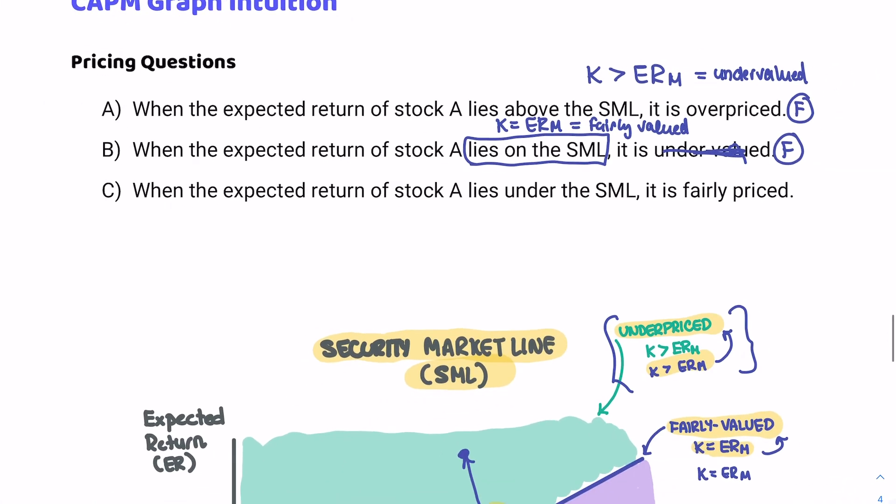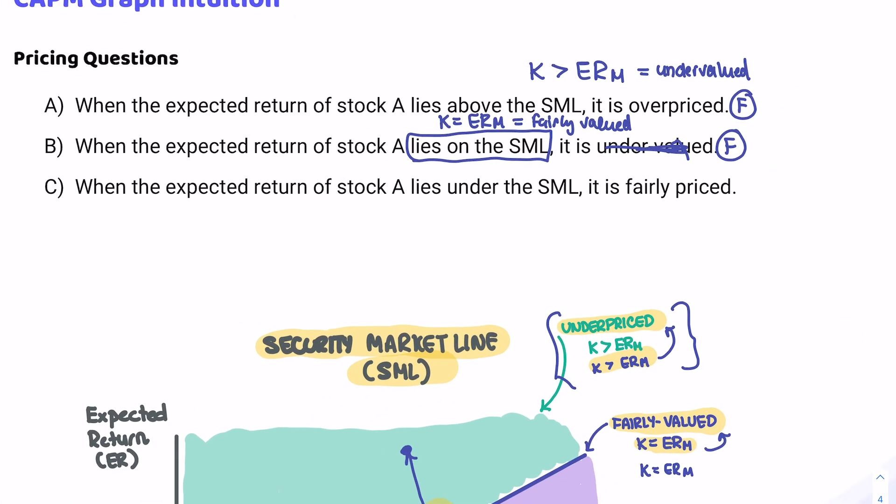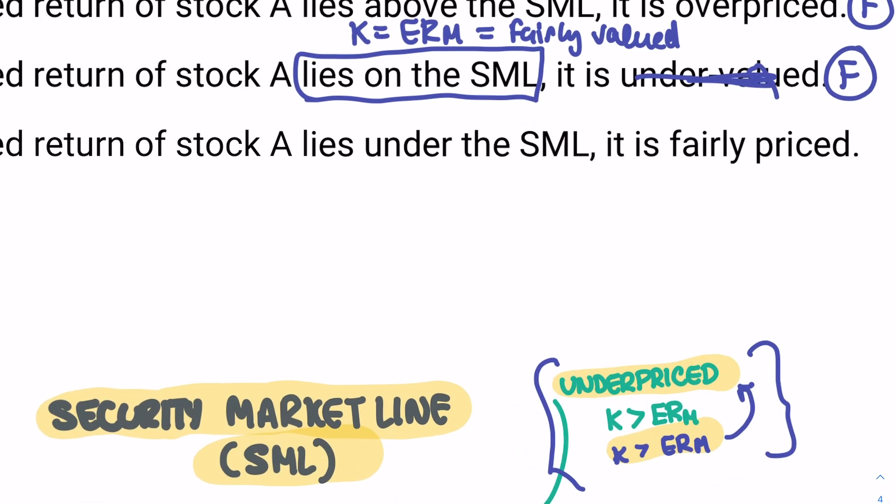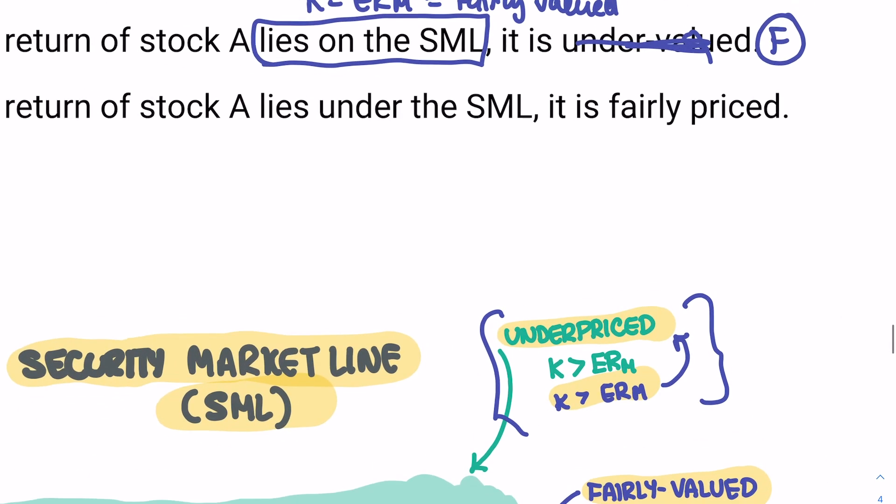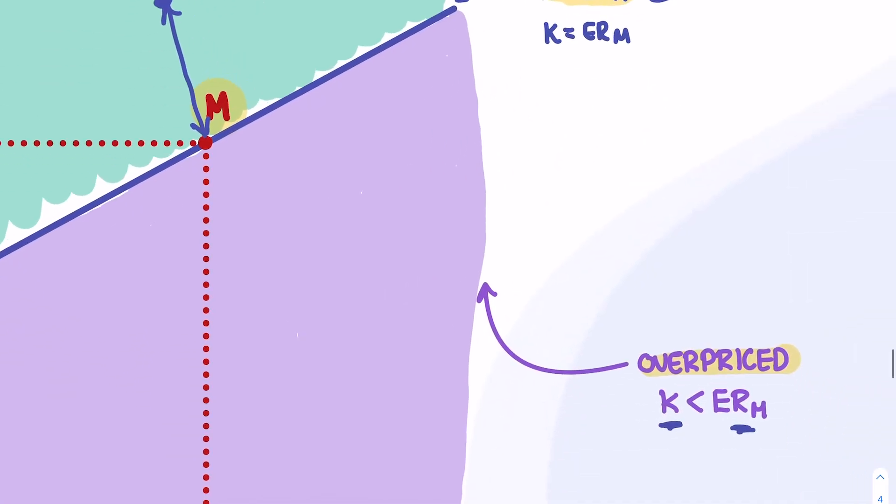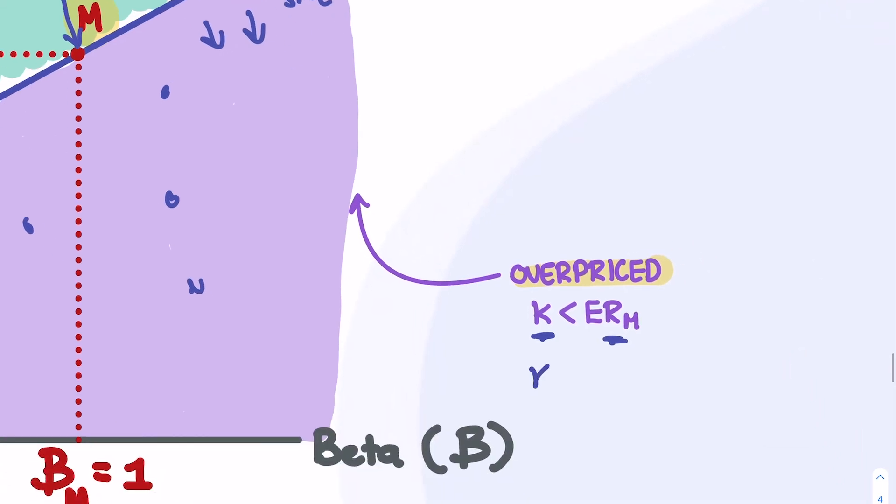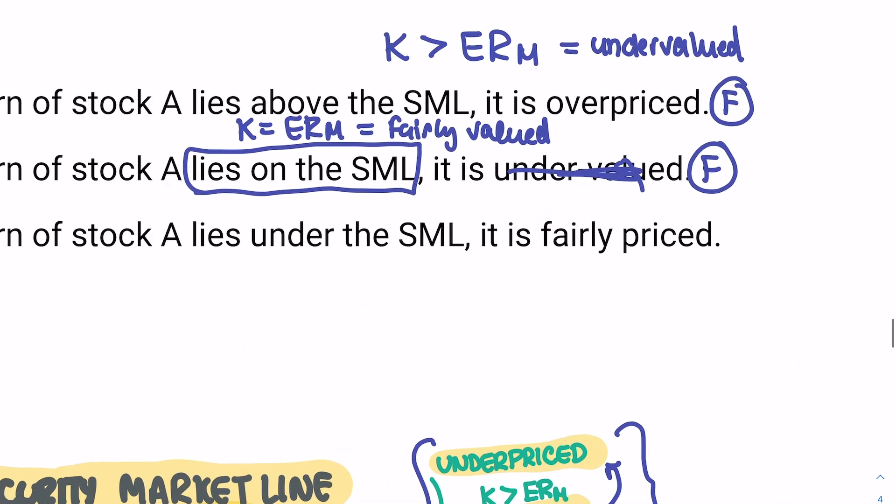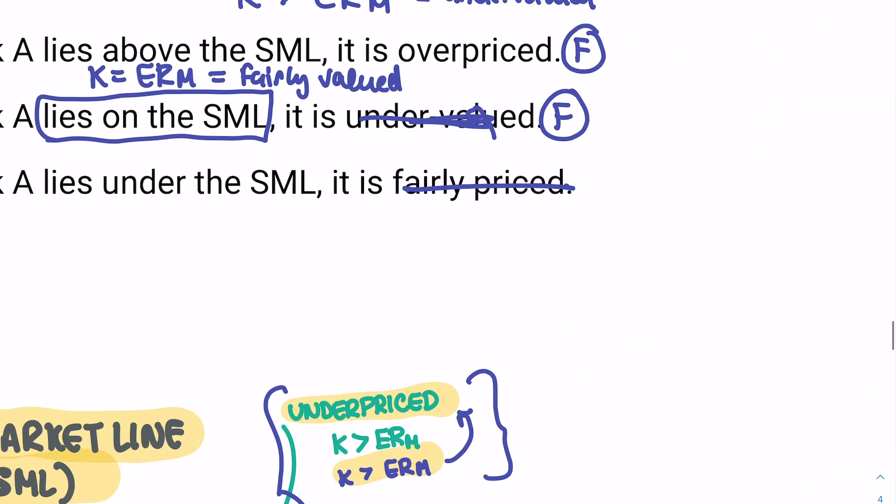In terms of C, we're telling you that when the expected return of the stock lies under the SML, it is fairly priced. But we know, as we've discussed, that if it lies below the SML line, K is smaller than ERM. Therefore, it's overpriced. So saying that it's fairly priced is false. This is false.